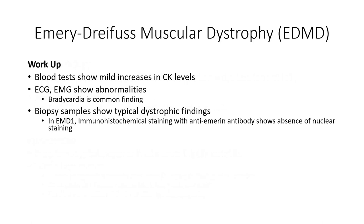As initial symptoms share many similarities to limb-girdle muscular dystrophy, the early differential diagnosis should consider both conditions and therefore follow a similar course. Initial blood tests should show only a modest increase in creatine kinase; observed elevations greater than 10 times normal indicate that a disorder other than EDMD should be considered. ECG studies should be considered whenever EDMD is suspected, with bradycardia being the most consistent finding. Muscle biopsy samples will show typical pathology associated with most muscular dystrophies, and immunohistochemical staining for LINC complex proteins should be considered for abnormal staining patterns to assist with the specific diagnosis.